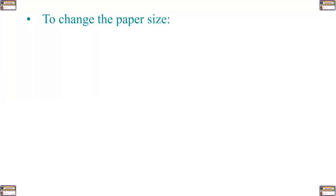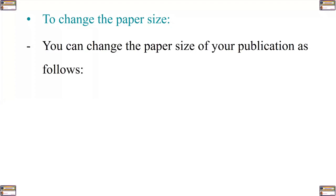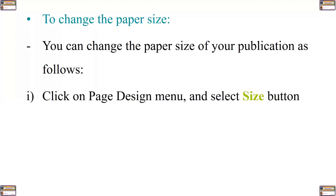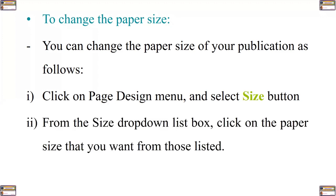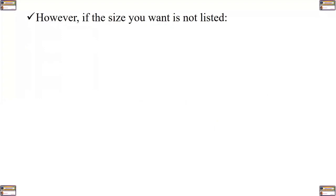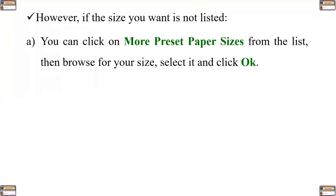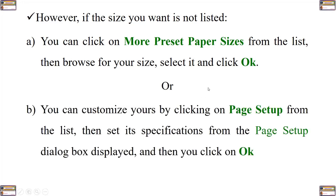The other activity you can perform when designing your publication is to change the paper size. You can change the paper size as follows: click on Page Design menu, then from the drop-down list box, click on the paper size that you want from those listed. However, if the size you want is not listed, you can click on More Preset Paper Sizes from the list, browse for your size, select it and click OK. You can also customize your own by clicking Page Setup, set its specifications from the Setup dialog box, and click OK.